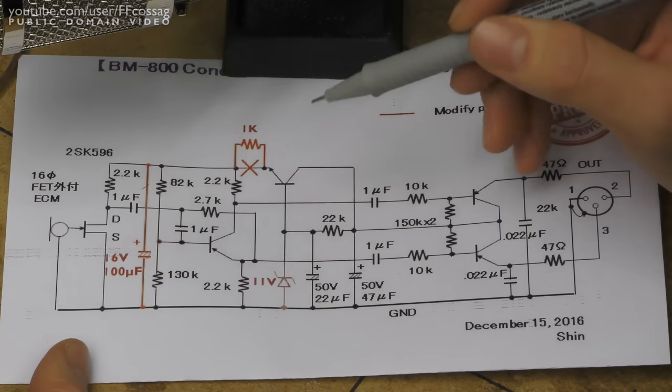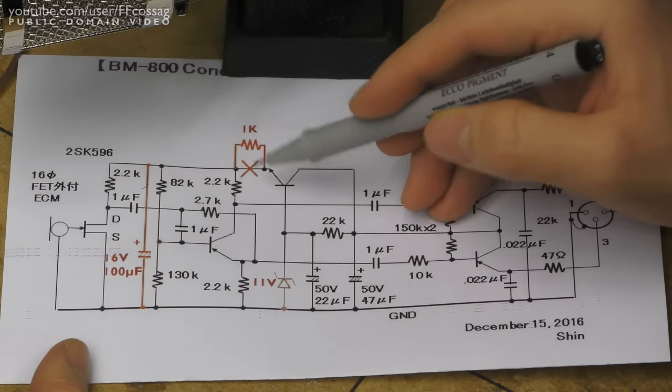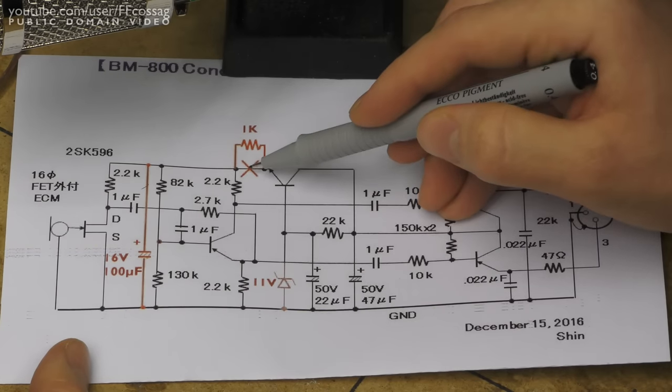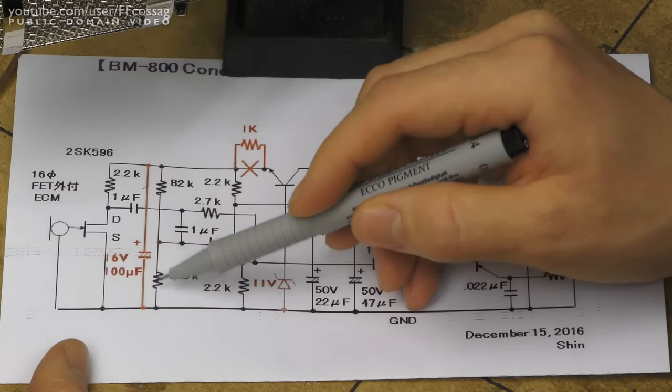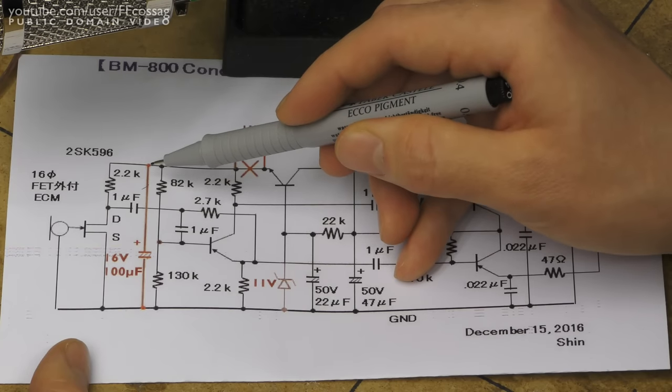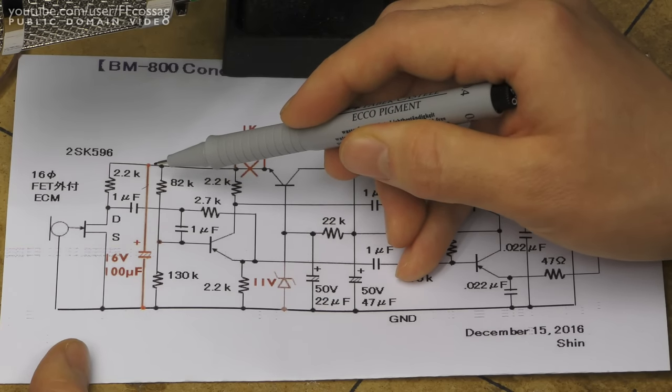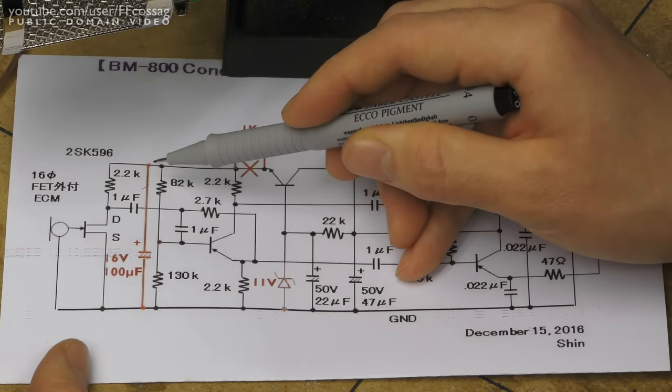The original modification, which I found on the internet, cuts this trace, puts a 470 ohm resistor in there, and a 220uF capacitor across the output of the regulator. This does an excellent job at cleaning up the power supply.